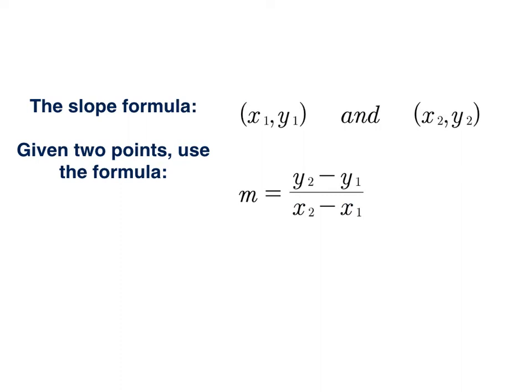You can use a formula if you have two ordered pairs, and what we do is we label them, the ones and the twos. It doesn't matter which point you give the ones and which point you give the twos, because the ratio of those differences will be equal regardless of which point gets used first. So let's try it with a couple of problems.